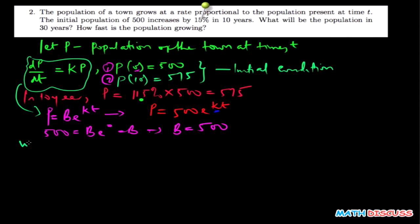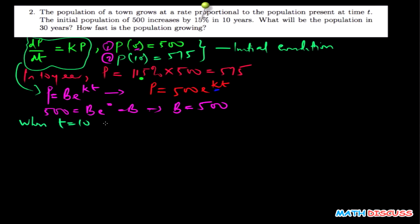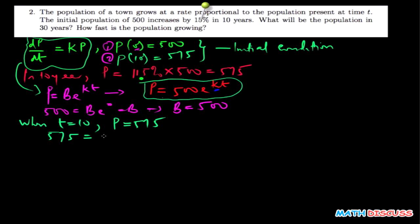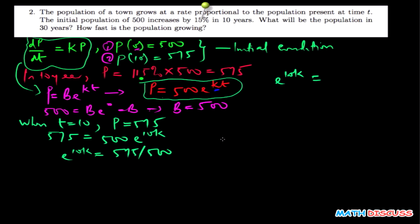Implementing that: when t equals 10, population is 575. Using this equation, 575 equals 500 e to the power 10k. To find k, I divide both sides by 500. So e to the power 10k equals 575 divided by 500, which gives us 1.15.